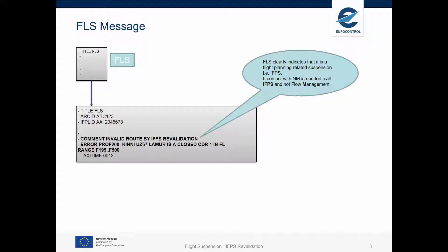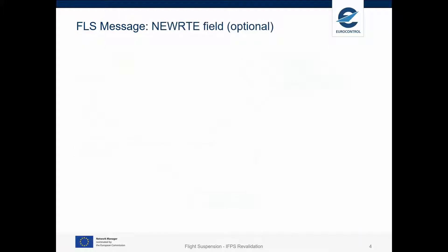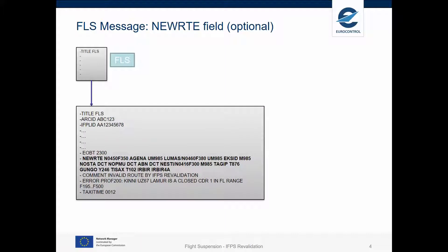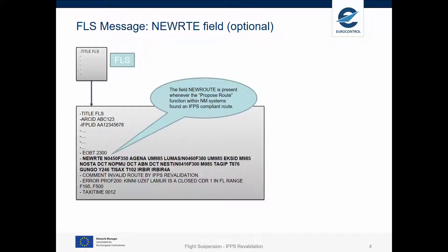The FLS also provides the list of errors that were found during the revalidation. In some cases, the FLS will contain a field called New Route. This is an IFPS compliant route that may be re-filed if suitable for you.